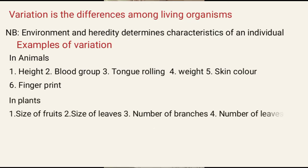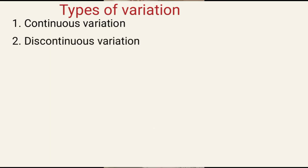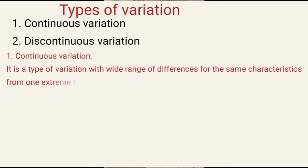In plants, you have the size of the fruit, size of the leaves, number of branches, number of leaves, internodes, and so on. Now, we need to know types of variation. Mainly, there are two types: Number 1, continuous variation; Number 2, discontinuous variation. Continuous variation is a type of variation with a wide range of differences for the same characteristics from one extreme to the other — that is, it is a type of variation that has intermediate forms.